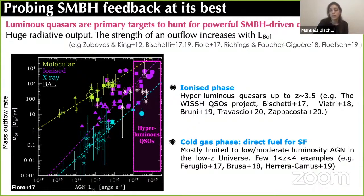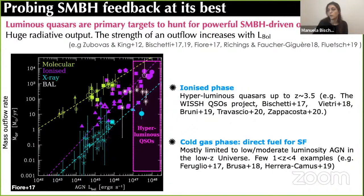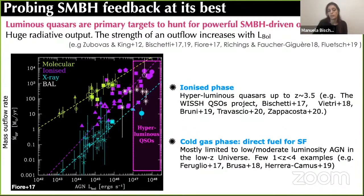Unfortunately, essentially no redshift 6 points are on this plot. For what concerns the ionized phase, outflows in luminous quasars have been observed out to redshift 3 and 4, for example in the WISSH quasar project. But for what concerns the cold gas phase — the direct fuel for star formation — essentially what we know so far is mostly limited to low-to-moderate luminosity AGN in the local universe.